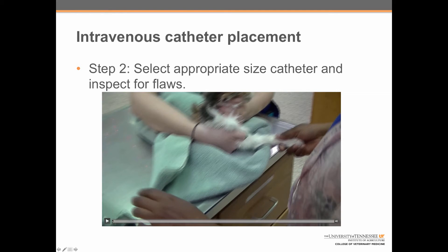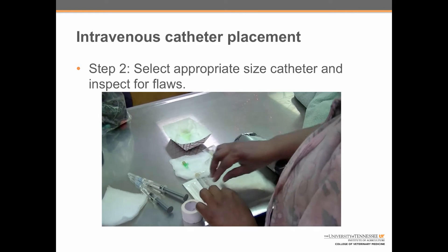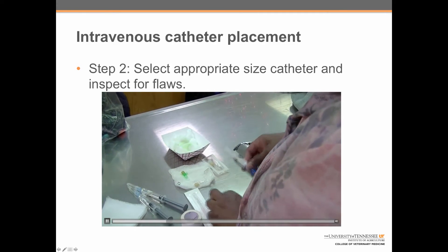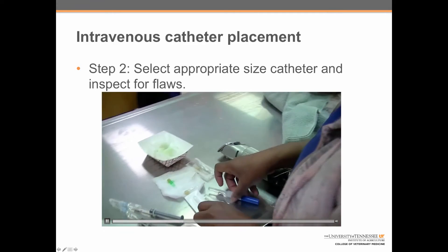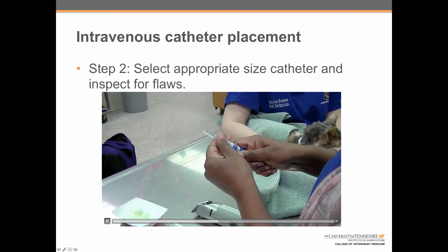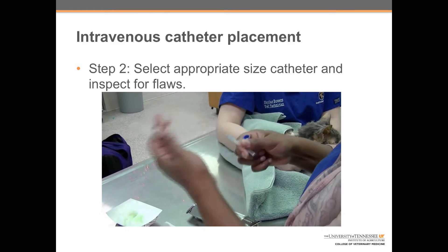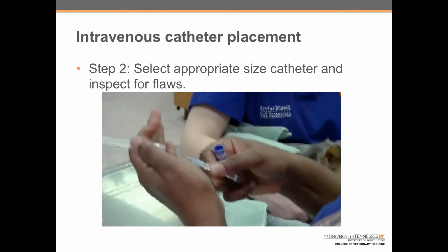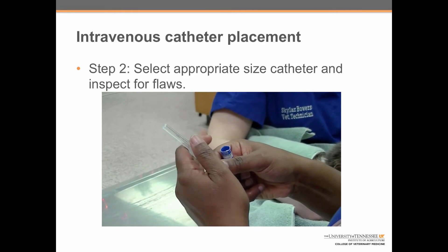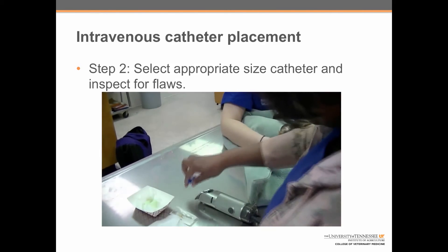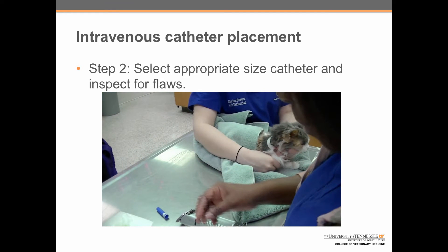Step 2: select an appropriate size catheter and inspect it for flaws. The most common catheter sizes used for cephalic catheters are 20-gauge or 22-gauge. For patients that you will typically see on service, a 22-gauge catheter is usually the right choice. We can see Shanna popping the back of the case off and then examining it to make sure there are no burrs or defects in the catheter, and then placing it back down within easy reach.